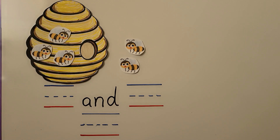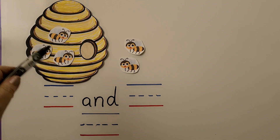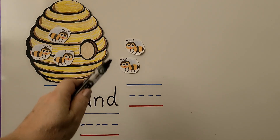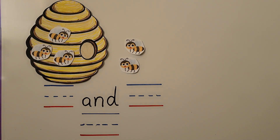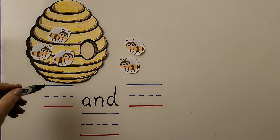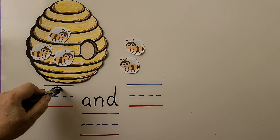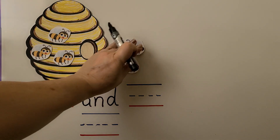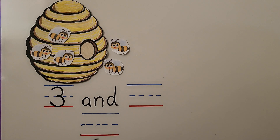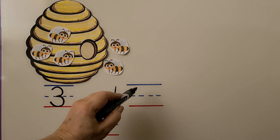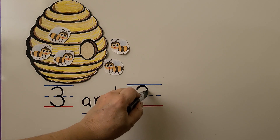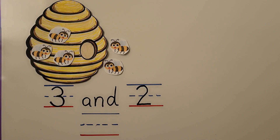Listen carefully to this problem. Three bees are at the hive. Two more bees come. How many bees are at the hive now? There are three bees, so here we write the number there is first. At first there were three bees. Two more bees come — we write that number here. This is how many more. The word 'and' tells us we need to put them together and find how many there are now.